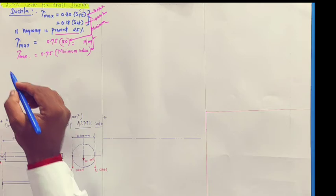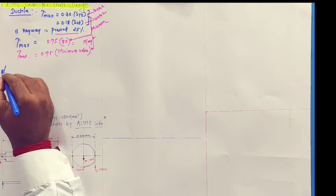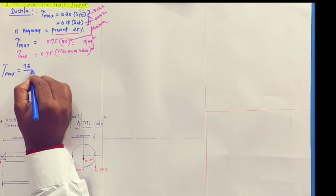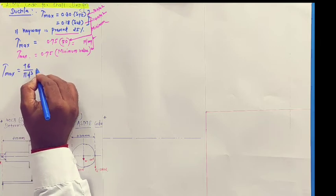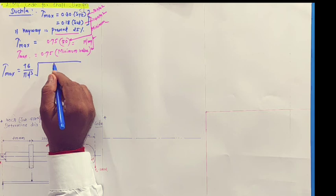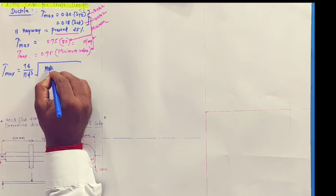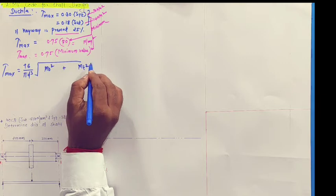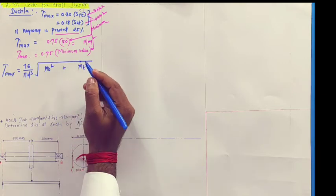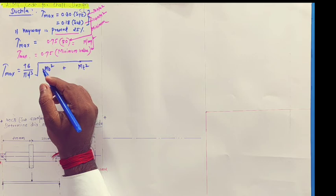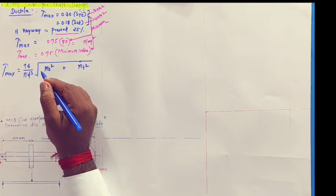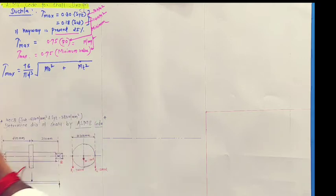Now, where is it used? As we know, shaft design on the strength basis, we have written tau max is equal to 16 by pi d cube square root. Here, we have taken Mb square plus Mt square in solid shaft. But, if they have suggested, or if they have asked for the ASME code, design a shaft on the basis of ASME code, here, I will have to use two factors which are called Kb and Kt.